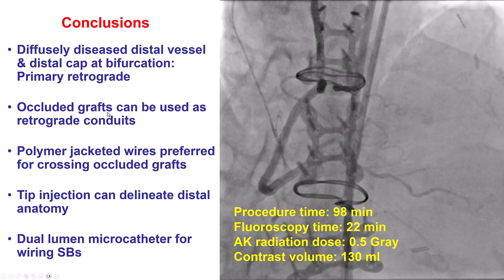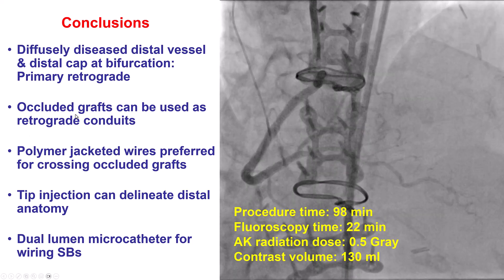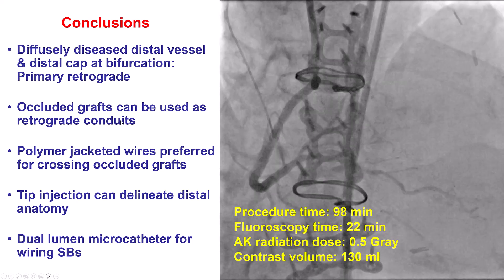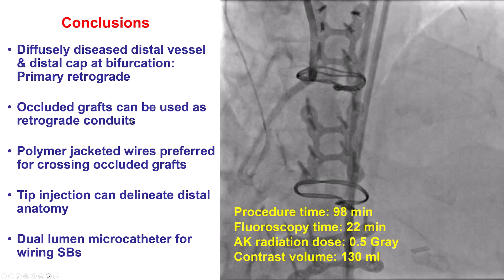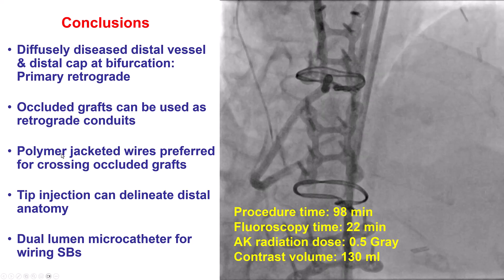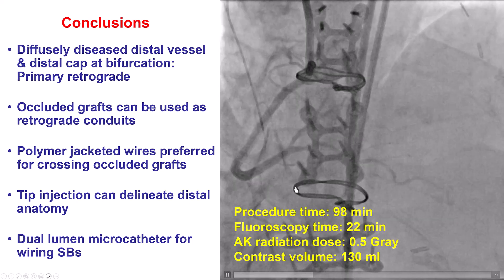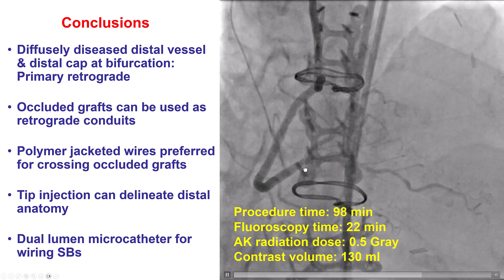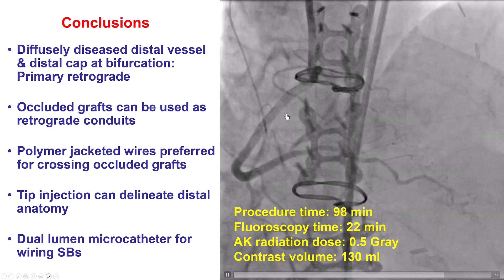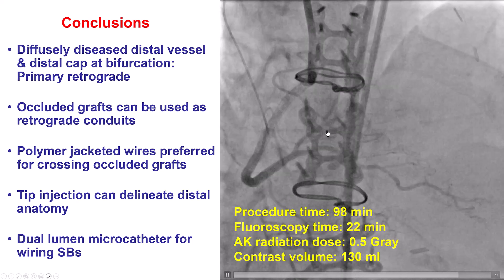The second lesson is about the retrograde conduit: saphenous vein grafts, even if occluded, can be used as retrograde conduits — as was the case here — and often they can be crossed with a polymer-jacketed guide wire quite easily. The third lesson is the use of a polymer-jacketed wire for crossing occluded vein grafts. The fourth is the use of tip injection through the microcatheter to delineate distal anatomy, and finally, using a dual-lumen microcatheter when coming antegrade to advance a guide wire into the posterolateral side branch at the bifurcation.